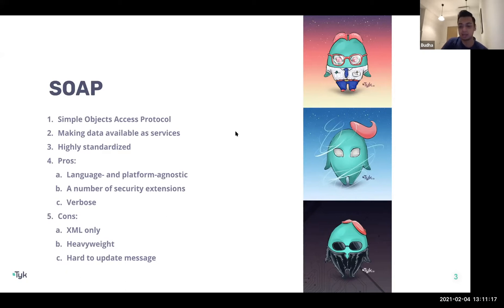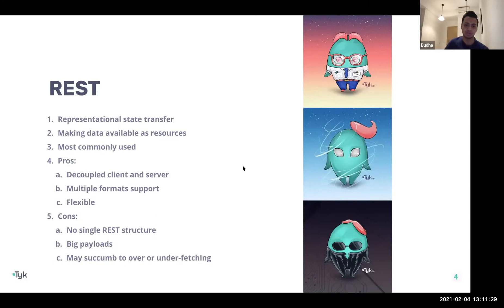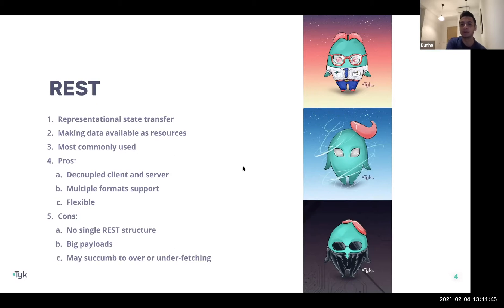With some of those concerns, we moved into the next shift in API management — probably the most popular one that exists today — and that would be REST, which stands for Representational State Transfer. What it did was make data available as resources, as opposed to simple web services like SOAP. It is definitely the most commonly used means of communication between systems.